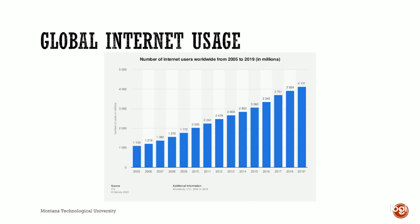If you think about global internet usage — just people that get on the internet as a whole — there is a company called Statista that tracks these kinds of things. This is a chart from their website. You can see in 2005, we had about 1.1 billion people on the internet. If we go forward to last year, you can see we're up to about 4.1 billion people on the internet — all out there using the lines that we need to throw our content on.